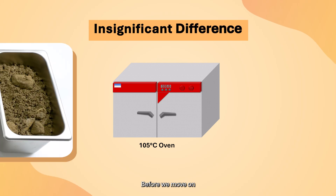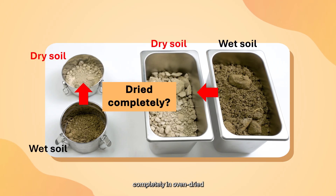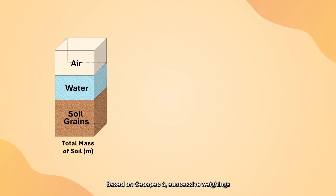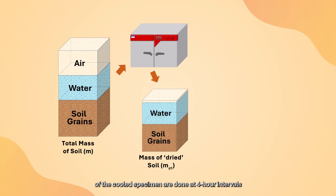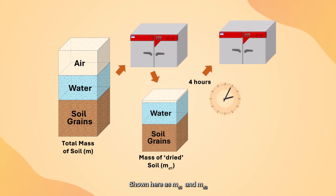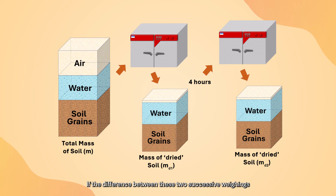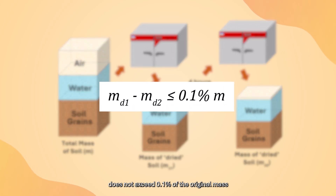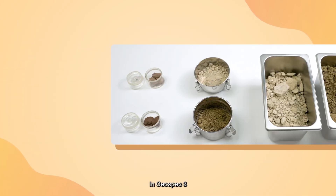Before we move on, let's talk about how we can make sure that a soil has been dried completely in oven drying. Based on GeoSpec 3, successive weightings of the cooled specimen are done at 4-hour intervals, shown here as MD1 and MD2. If the difference between these two successive weightings does not exceed 0.1% of the original mass of the wet specimen MS, then the soil is accepted as dried.